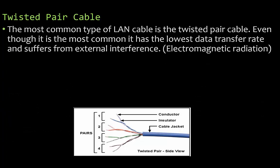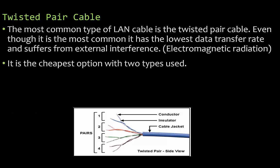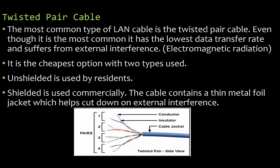The most common type of local area network cable is the twisted pair cable. Even though it's the most common, it has the lowest data transfer rate and suffers from external interference from electromagnetic radiation. It is the cheapest option. Two types are used: unshielded, used by residents, and shielded, used commercially. The cable contains a thin metal foil jacket which helps cut down on external interference.